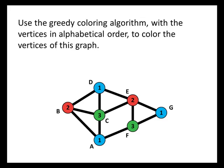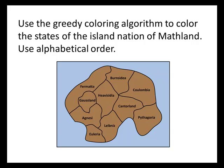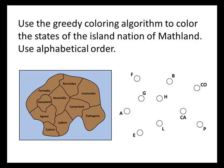So that's the greedy coloring algorithm — if you're given a graph and an order for the vertices, that's how you color them. But sometimes you'll get a problem that looks like this. Here we have a map of the island nation of Matland, and we have to color the states using the greedy coloring algorithm with the states in alphabetical order. The first thing we'll need to do is translate our map into a graph. We'll draw one vertex for each state, placing them roughly in the same position they appear on the map. Then we connect two vertices by an edge if the corresponding states share a border.